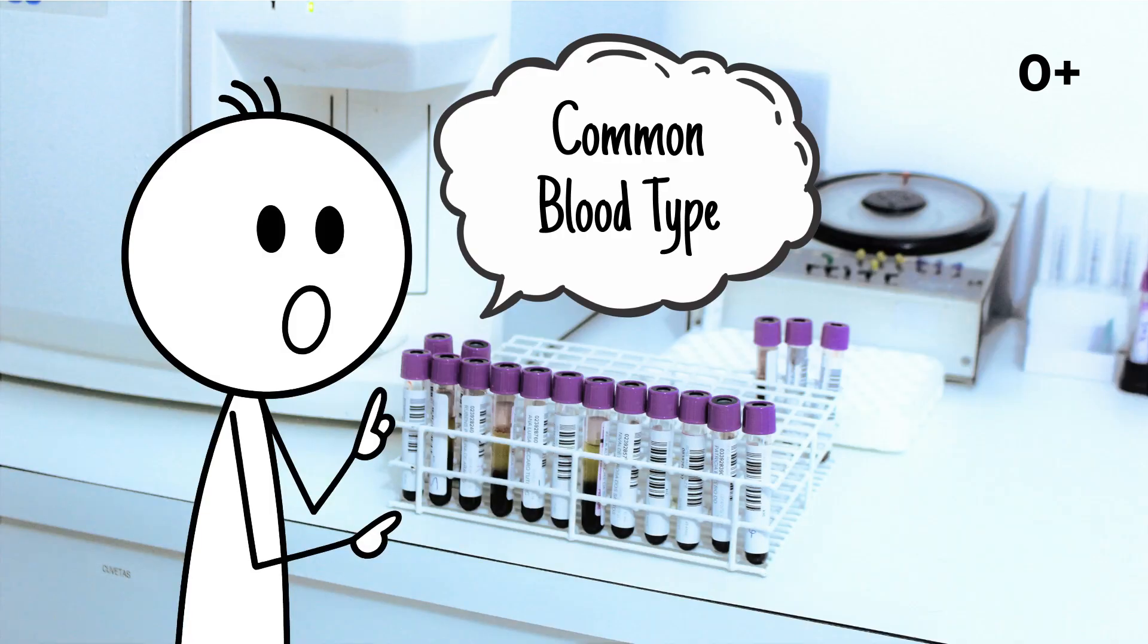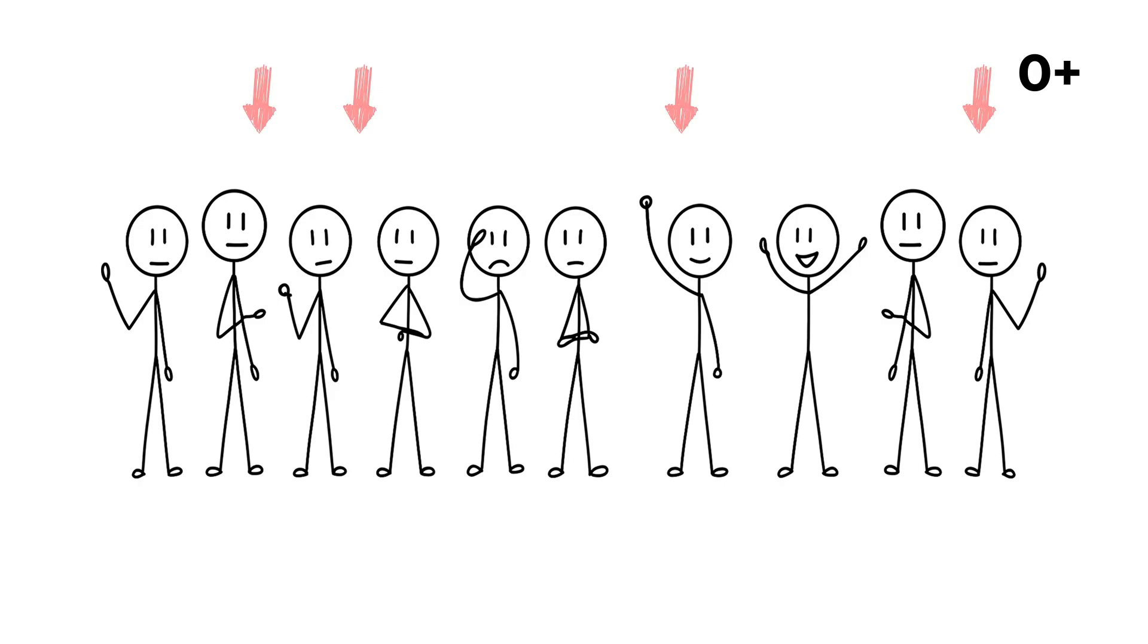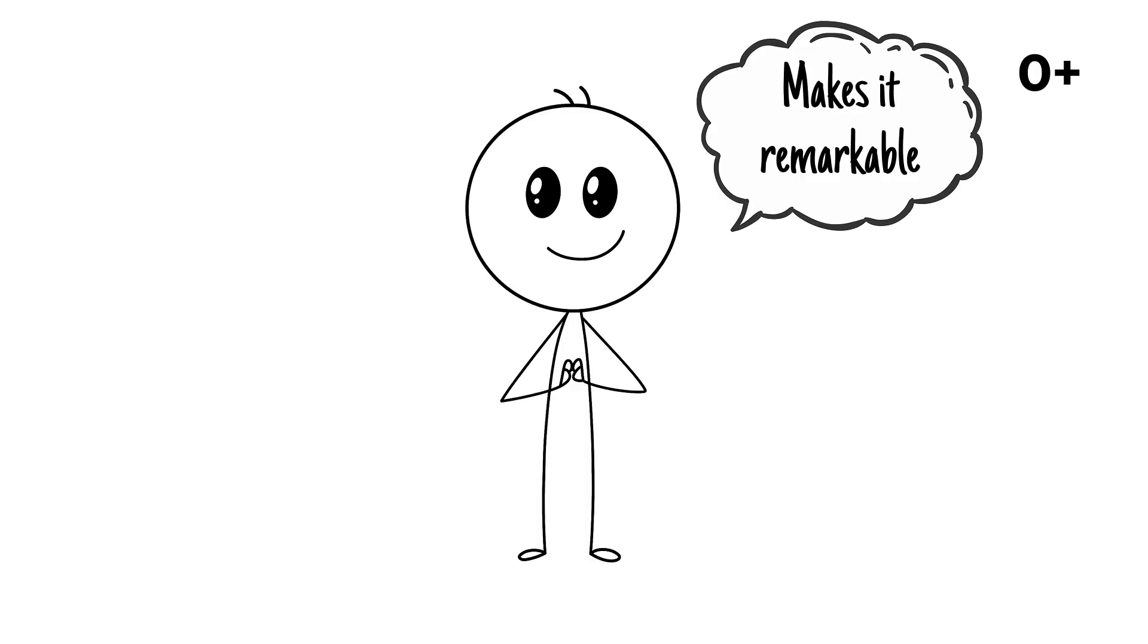O-positive is the most common blood type globally, found in roughly four out of every ten people. Its most remarkable trait is its broad reach in transfusions.